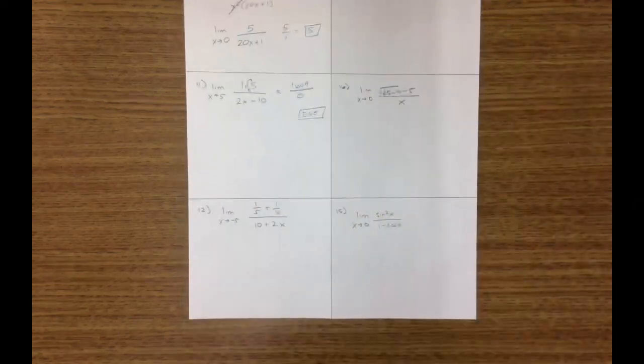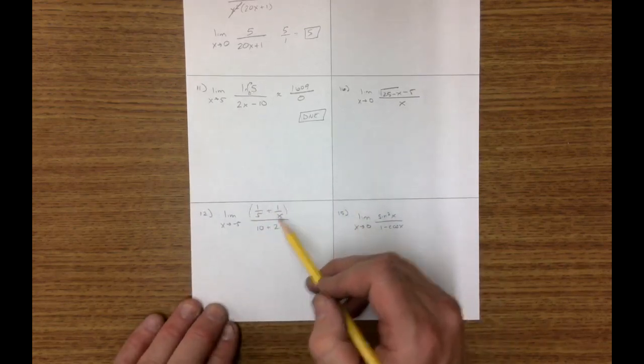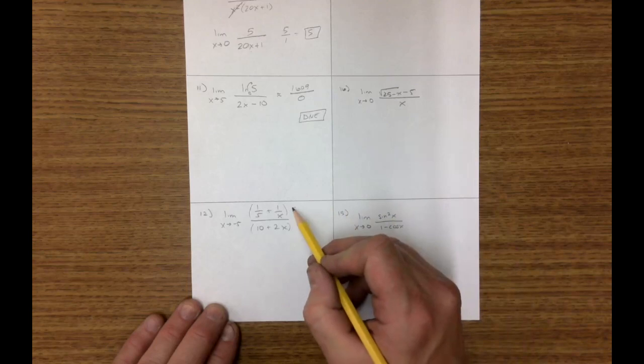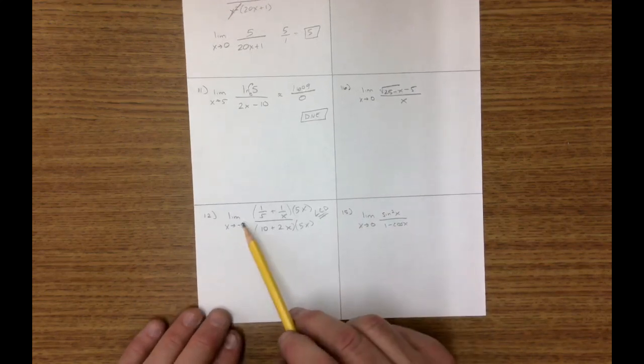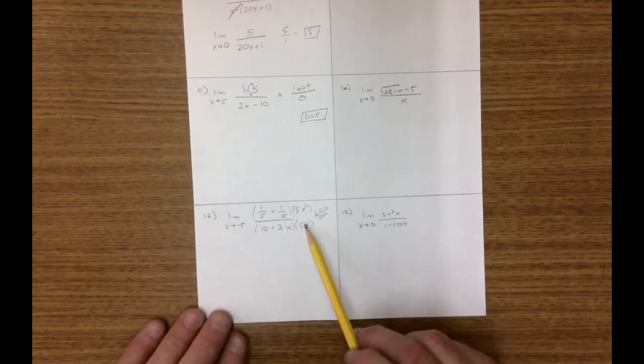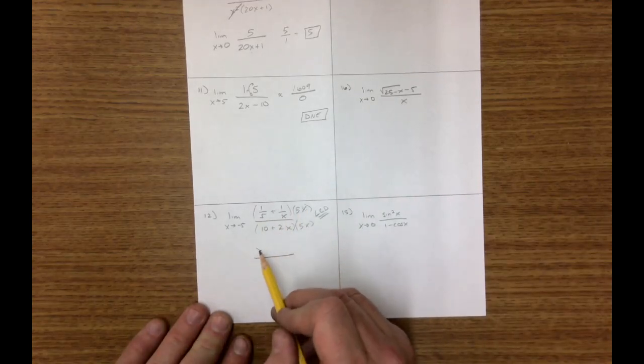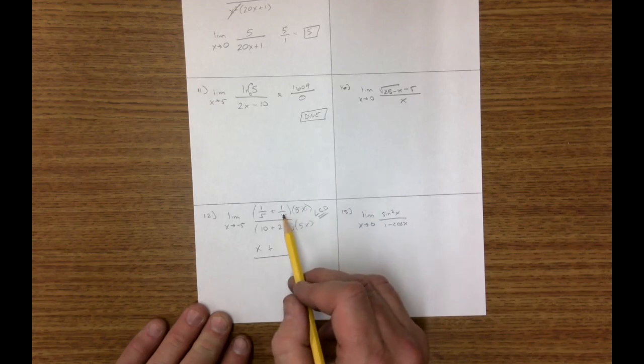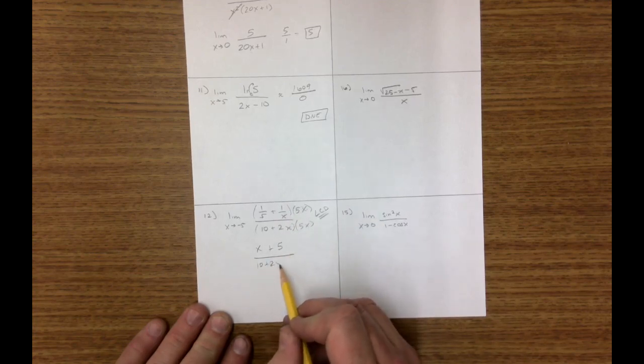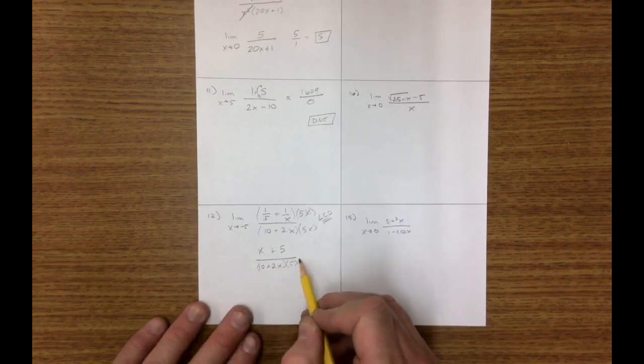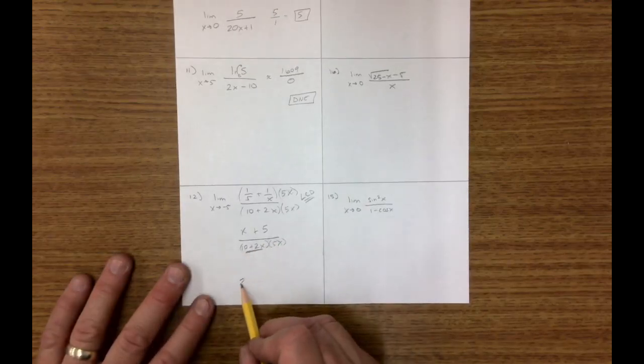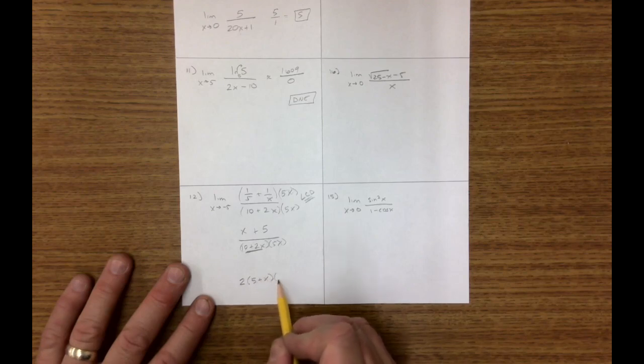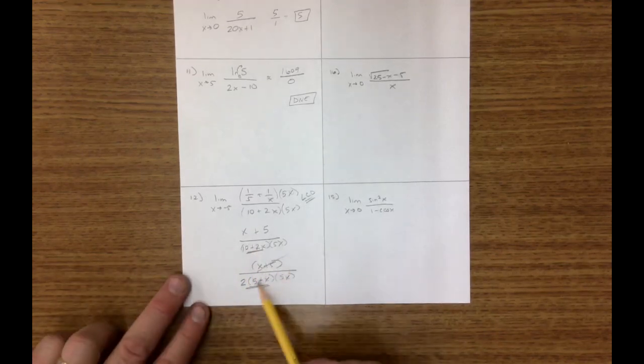On the bottom one, if I have these fractions, I could go ahead and multiply by 5x because that's the LCD of the denominator. Plugging in negative 5 gets you to 0 over 0. But if I multiply by this, I'll have 5x times 5 is x plus 5x times 1 over x is just 5. And now I have 10 plus 2x and a 5x. And nothing looks like it can be simplified until I think about this term, that does have a 2 in there. So I could factor that bottom one more step here to this, and now those go away.